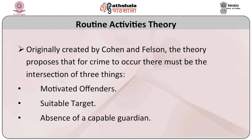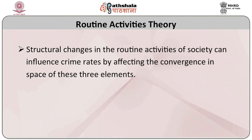Routine Activities Theory, originally created by Cohen and Felson, proposes that for crime to occur there must be the intersection of three things: motivated offenders, a suitable target, and the absence of a capable guardian. Structural changes in the routine activities of society can influence crime rates by affecting the convergence in space of these three elements.